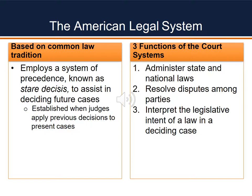It's also important to know there are three general functions of our court systems. First, we administer state and national laws. It's the responsibility of the court system to administer and ensure those laws are followed. Second, those court systems resolve disputes among parties. Again, in a few minutes we'll go into much more detail about what that means. Finally, the third function of our court system is to interpret the legislative intent of a law in a deciding case. That is directly related to our previous concept on common law tradition and stare decisis.